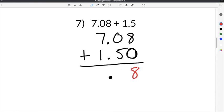So 8 plus 0 is 8, 0 plus 5 is 5, and then 7 plus 1 is also 8. So the solution to the addition of these decimals is 8.58.